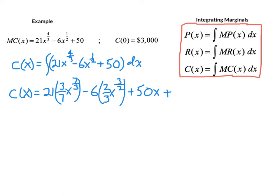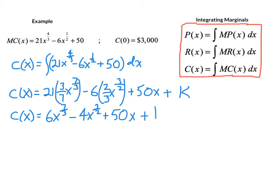Usually we use c to represent the arbitrary constant, but in a cost function, capital C means cost — so we change the label. There's nothing magic about the letter c, so here we use k for the arbitrary constant. Cleaning that up, we get a general form of the cost function: 6x to the 7/3 minus 4x to the 3/2 plus 50x plus k. If you're running a business and trying to get a handle on your cost function, it's very difficult when there's a dangling arbitrary constant plus k at the end.